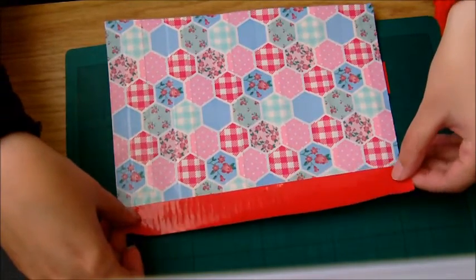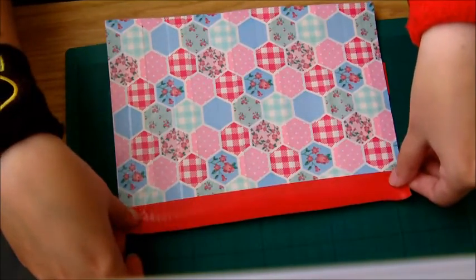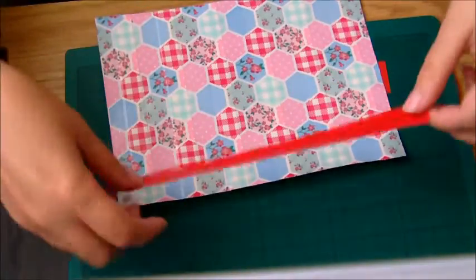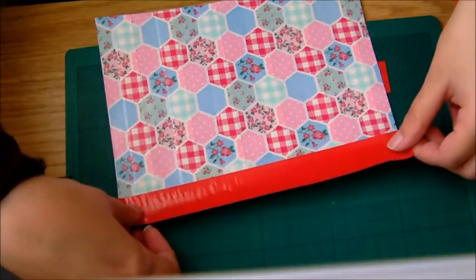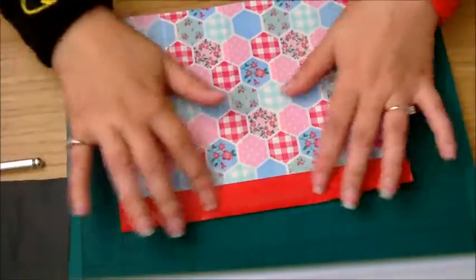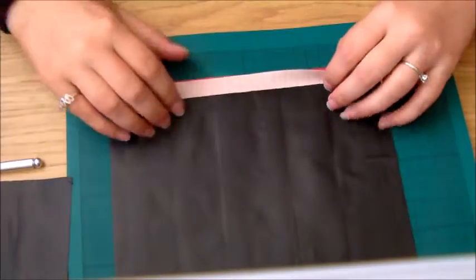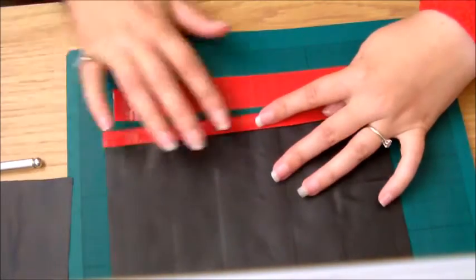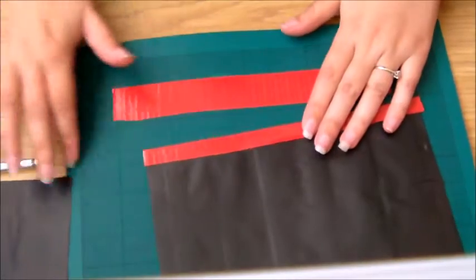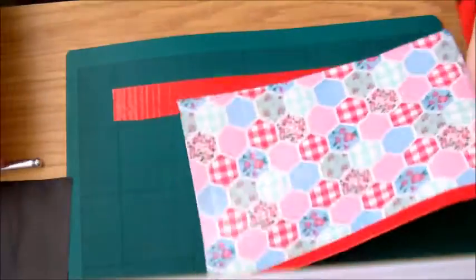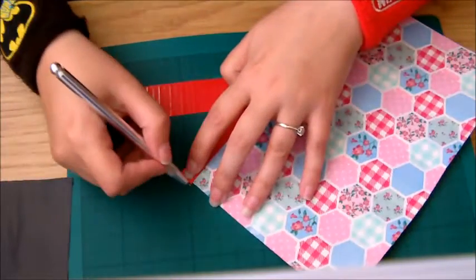So you put the duct tape half on one side and then just fold it over. As long as you get it in the center, I'd never do that the first time. Then you just fold it over to the other side and stick it down. You're going to do it to one of the long sides, one of the long sides and two of the short sides. Like this. And you just want to trim off any little excess because you don't want it leaving bumpy.